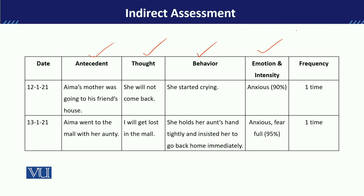For example, Ima's mother was going towards her friend's place, and Ima's behavior — crying — started. Her emotion was anxious, reported at 90% intensity on a one-to-hundred scale, where one is the minimum and hundred is the maximum. When Ima was asked what she was actually thinking, she said she was thinking that her mother would never come back.